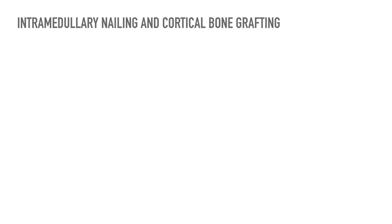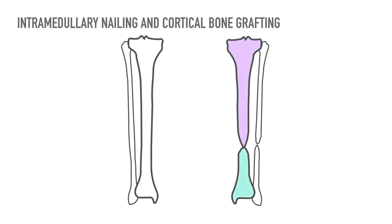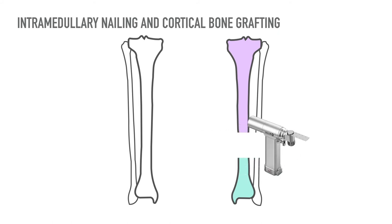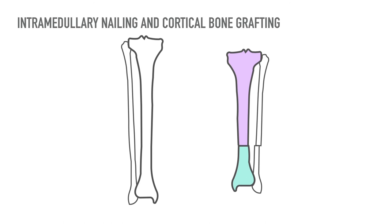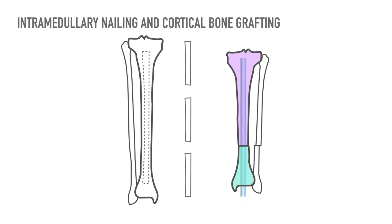Intramedullary nailing and cortical bone grafting involves three essential steps. The first step is excision of the pseudoarthrosis, which involves excising the tapered ends of the bone and surrounding thick periosteum. The second step is intramedullary nailing — a rush nail or a Peter Williams nail may be used, passed from the heel to the proximal tibial metaphysis. The third step is bone grafting to facilitate union.